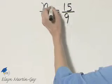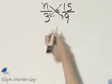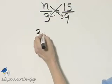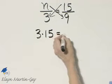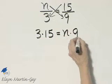So to solve, we're going to look at cross products. 3 times 15 should equal n times 9.